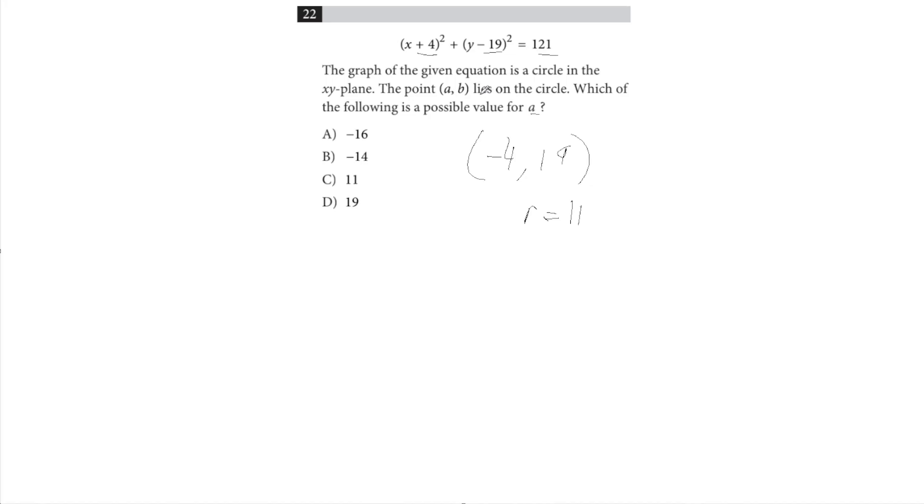So we want to find a possible value for a that lies on the circle. So a point that lies on the circle is a point that satisfies this equation, right?